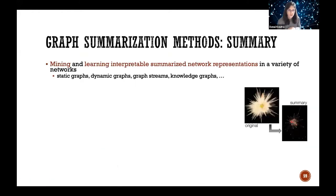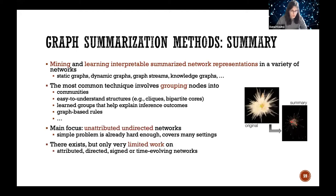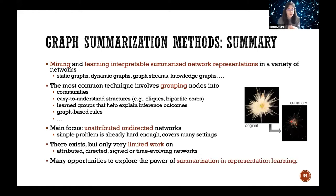To summarize this section: we looked at a short overview of mining and learning interpretable summarized network representations in different graph types — static, dynamic, knowledge graphs, and streams. The most common technique involves grouping to identify communities or easy-to-understand structures, a learned grouping explaining ML model outcomes, or graph-based rules. Most work focuses on unattributed undirected graphs, with less work on attributed, directed, signed, time-evolving, streaming, or multiple networks, and there are many opportunities in summarization and coarsening within representation learning.